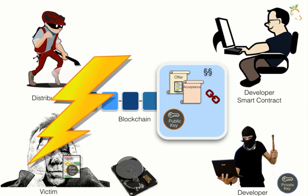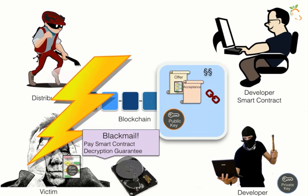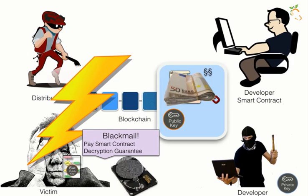After the encryption is done, a message is shown telling the victim to pay the ransom to the smart contract. Contrary to other ransomware software, the victim can see the track record of the ransomware developer on the blockchain. The victim also gets a decryption guarantee — if the decryption key is not provided, they will get their money back. So the victim is likely to pay the ransom to the smart contract.